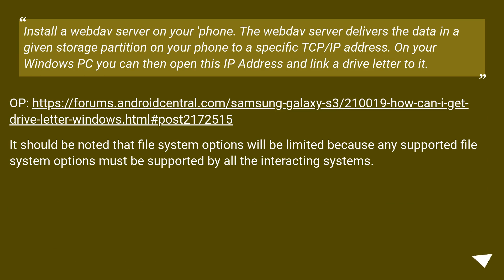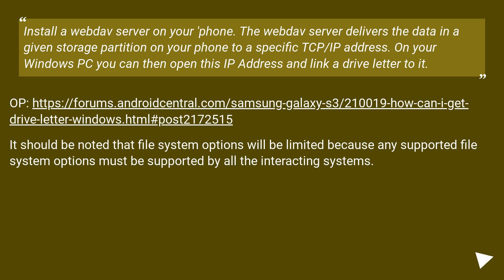Install a WebDAV server on your phone. The WebDAV server delivers the data in a given storage partition on your phone to a specific TCP/IP address. On your Windows PC you can then open this IP address and link a drive letter to it. It should be noted that file system options will be limited, because any supported file system options must be supported by all the interacting systems.